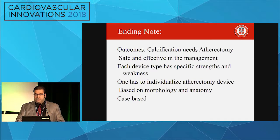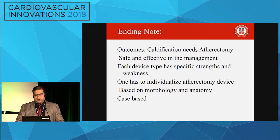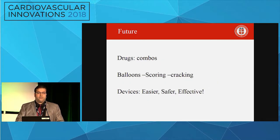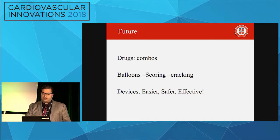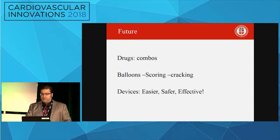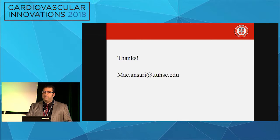The trend clearly shows slightly better amputation rates with atherectomy, no difference in all-cause death, slightly better bailout stenting. Ending note: outcomes for calcification need atherectomy - safe, effective, and feasible in management. Each device type has specific strengths and weaknesses. One has to individualize the atherectomy device based on morphology and anatomy - it has to be case-based. The future is different combinations of drugs, scoring and cracking balloons using drugs in combo, and devices that will be easier, safer, and effective.